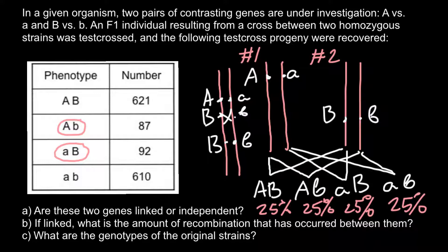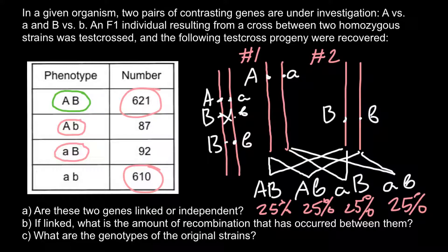For Question C — what are the genotypes of the original strains? — we choose those genotypes represented in the largest quantities. These are 621 and 610, which are nearly equal. This tells us the parental generation genotypes were capital A capital B, and small a small b. In green are the parental genotypes, and in pink are the recombinant genotypes.